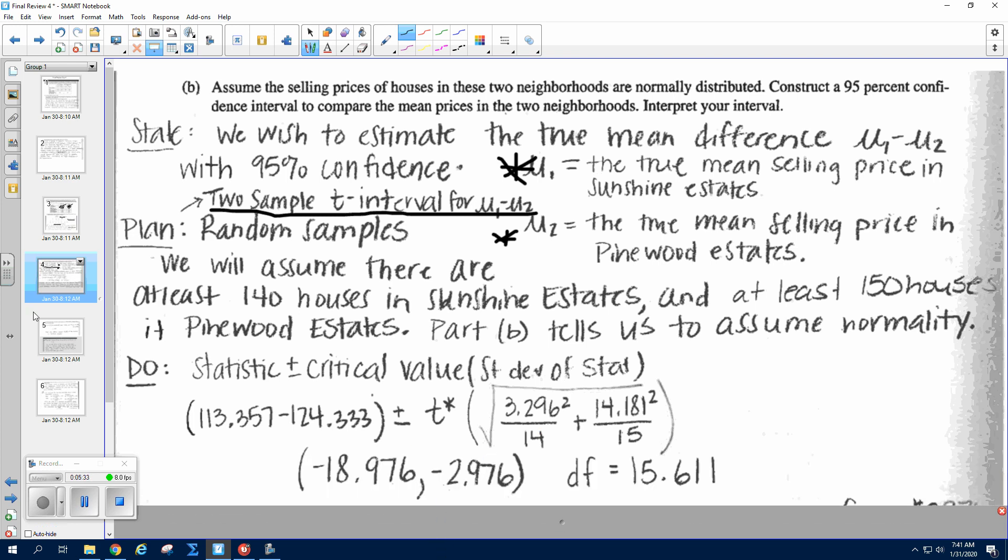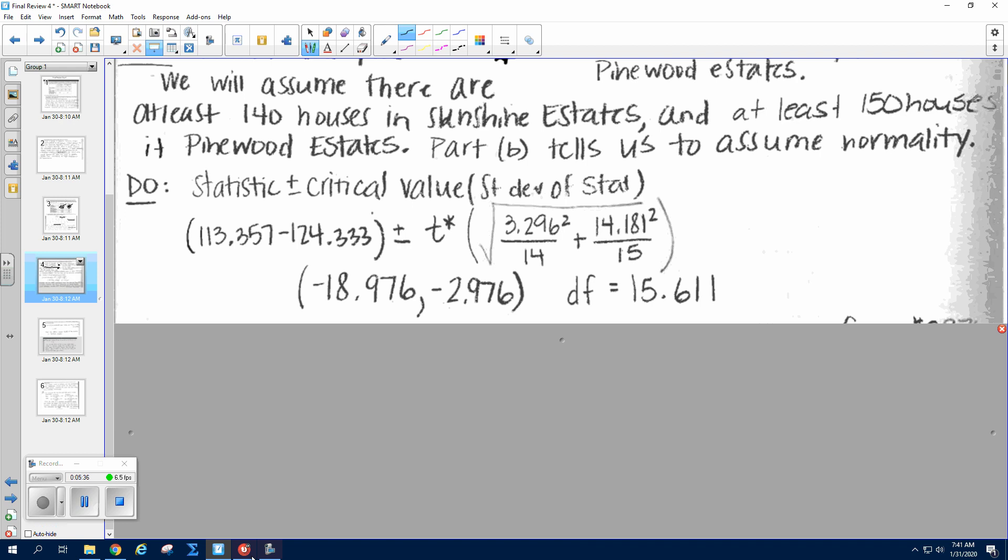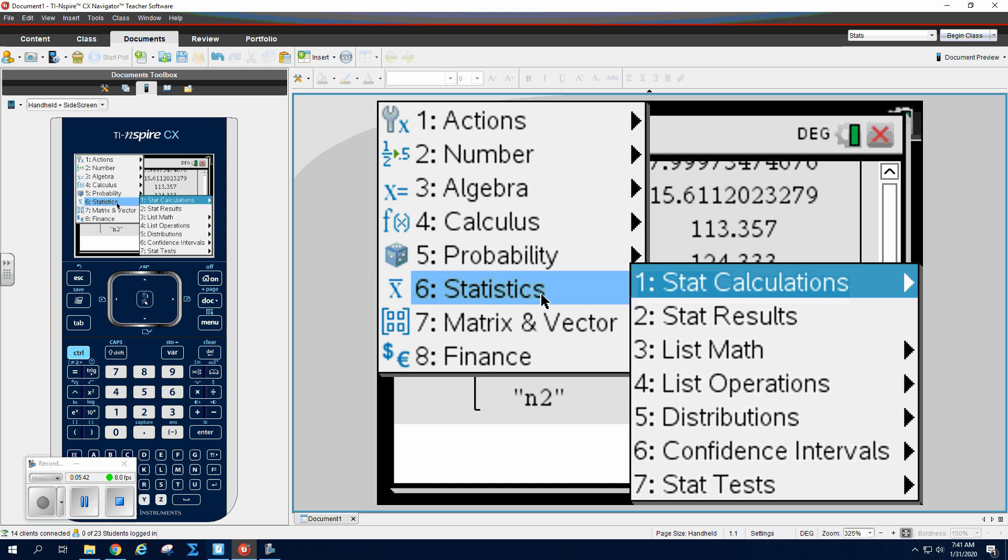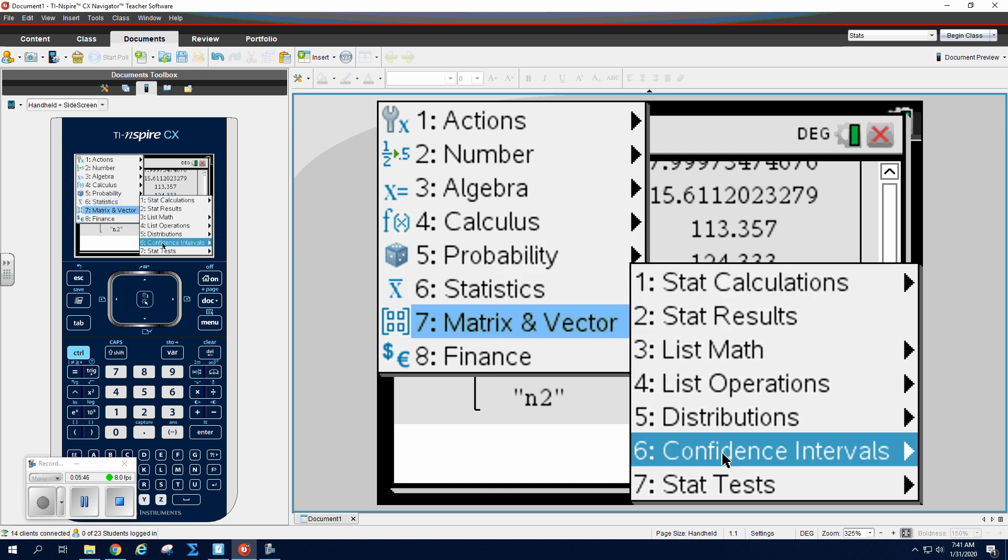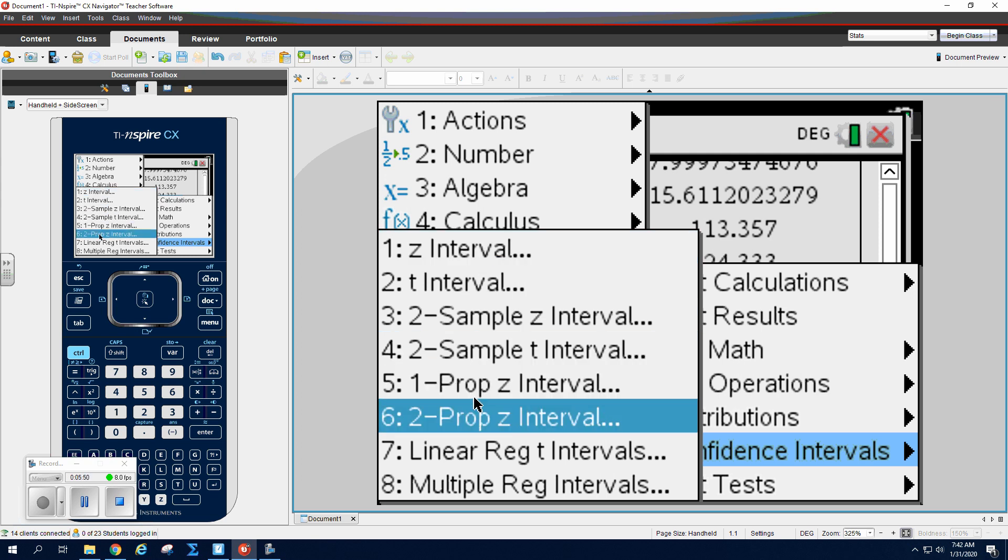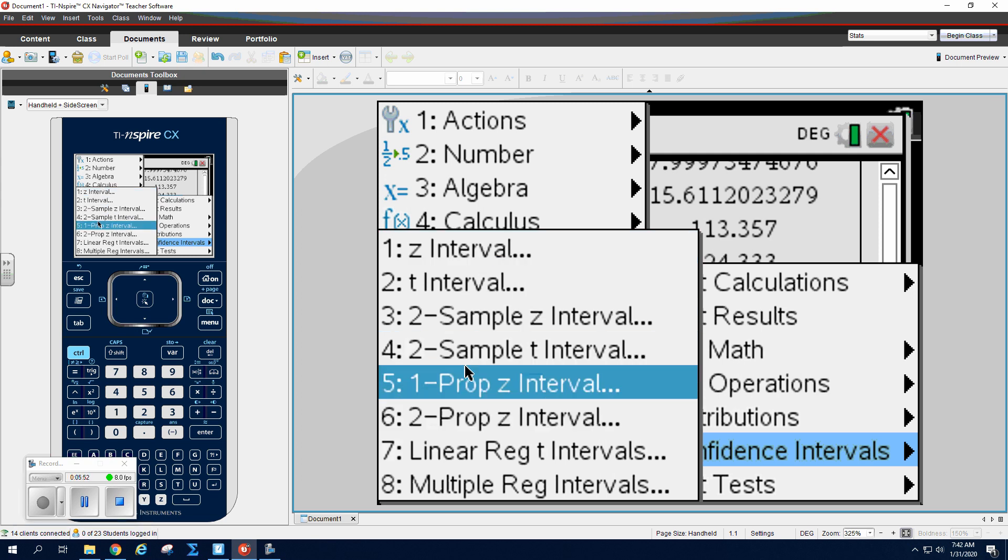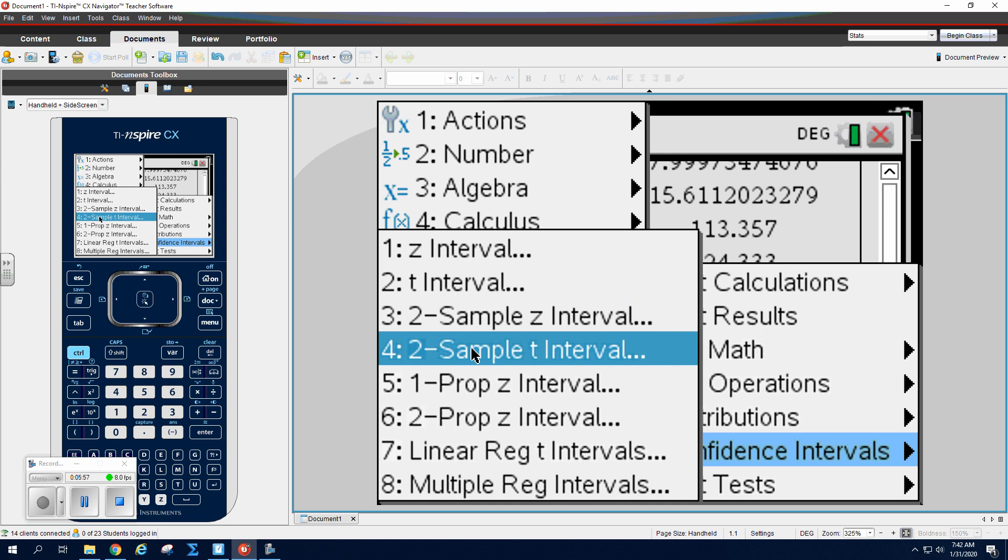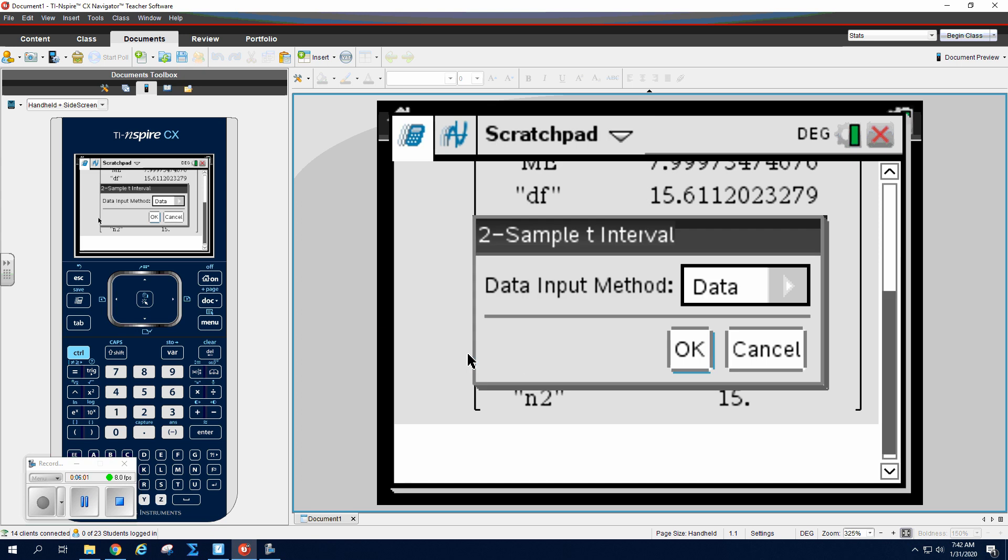Okay, we're gonna run the test on our calculator. So you actually want to go to your calculator, go to menu, go to statistics, go to confidence intervals. The first four are all for means, and these two are for proportions. So I have a t-interval and a two-sample t-interval. Again, the z's are when you know the population standard deviation, which we do not. So I'm going to do the two-sample t-interval.